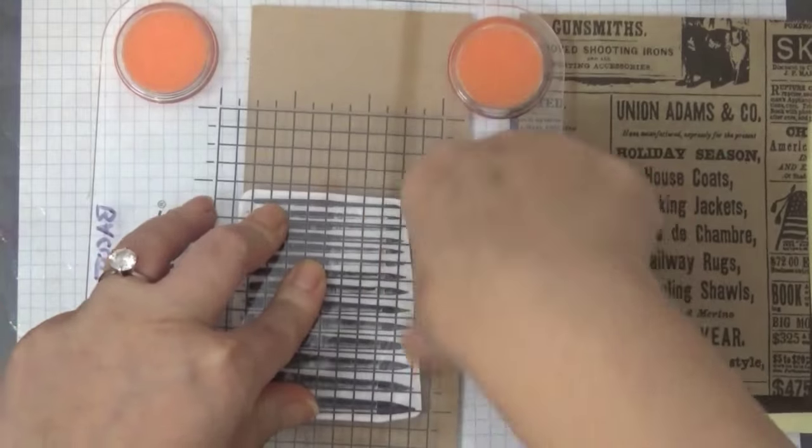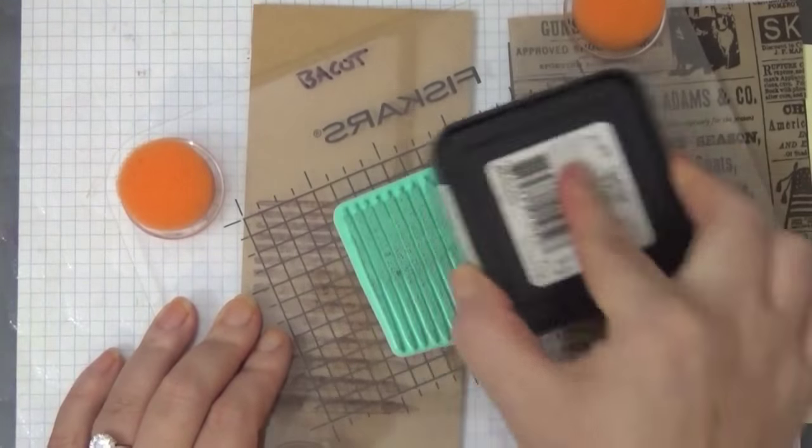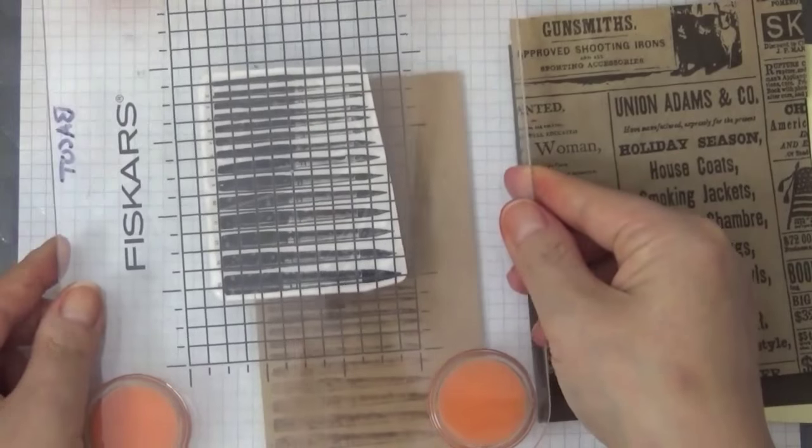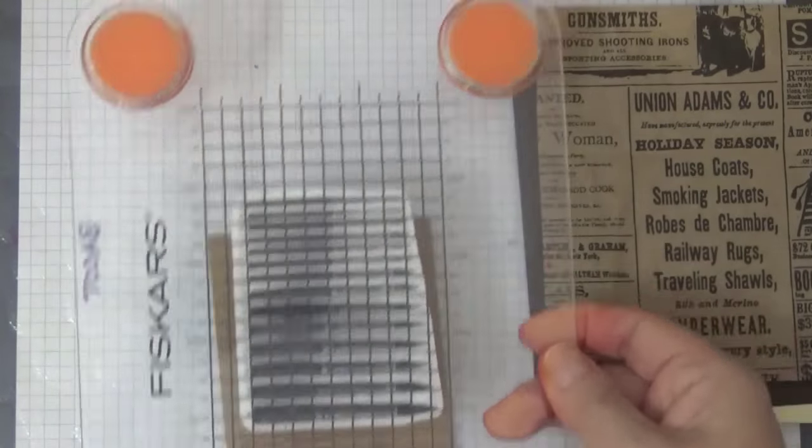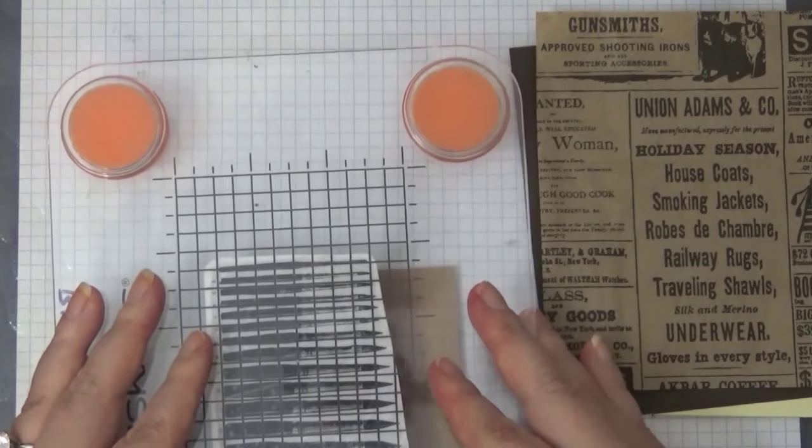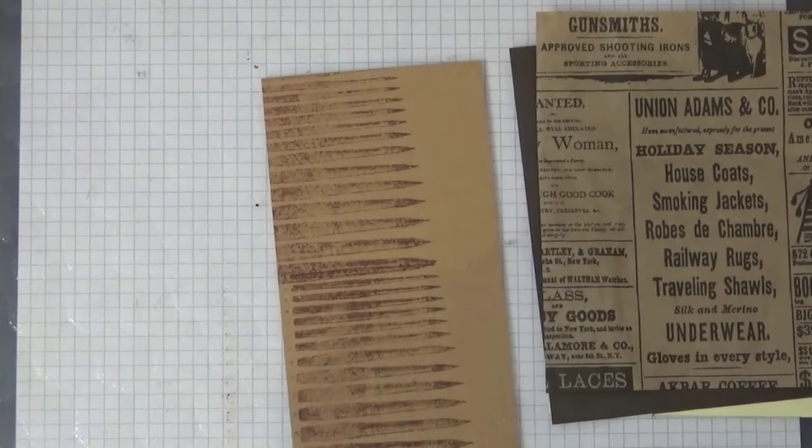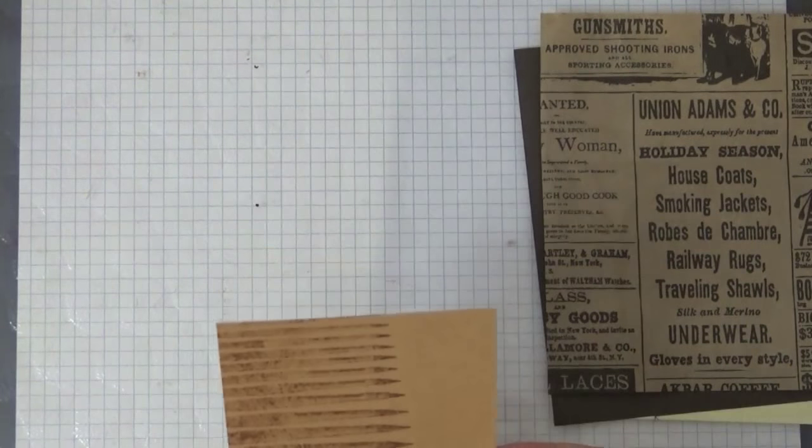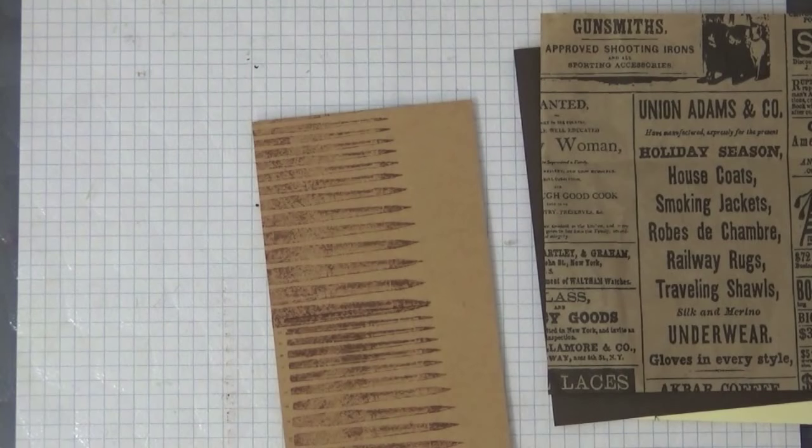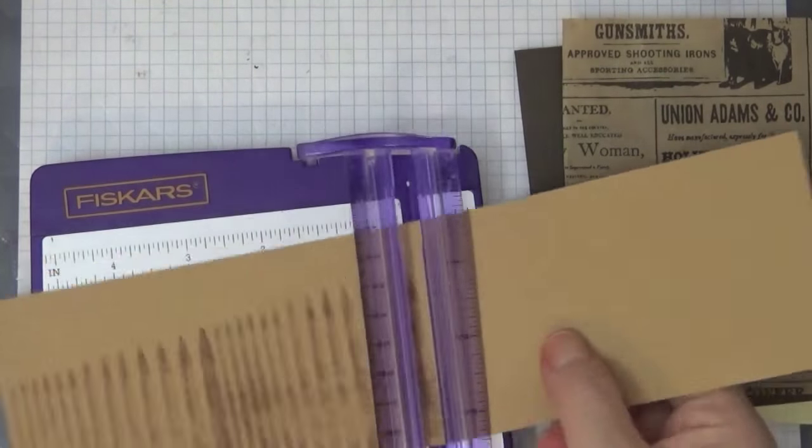Tupelo Designs has this 50% off section and they constantly add items to that section, so you might want to check it out frequently. You can get really good deals. Like I was saying, these Prima stamps are inexpensive anyways, but 50% off of that, so that's quite a steal of a bargain.